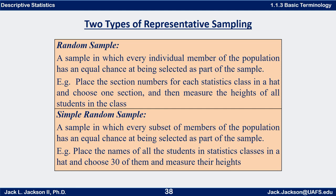Here's an example of a random sample that is not a simple random sample. Suppose the population is all statistics students this semester at our university. Place a section number for each statistics class in a hat, choose one section, and measure the heights of all students in that class to infer something about all statistics students. Notice every individual member of the population has an equal chance of being selected — so that is a random sample — but it's not a simple random sample.